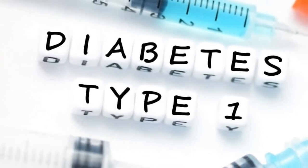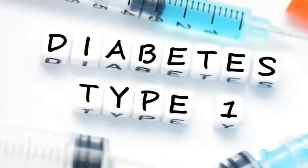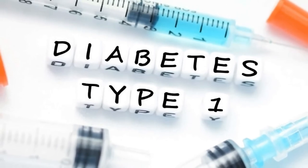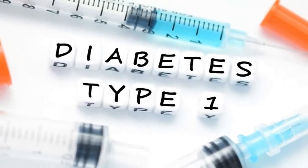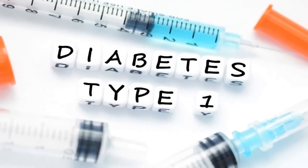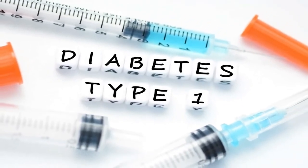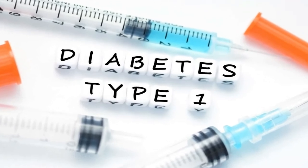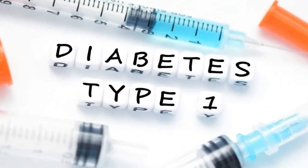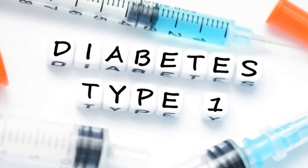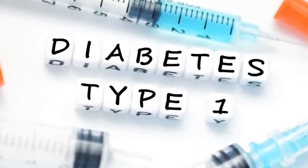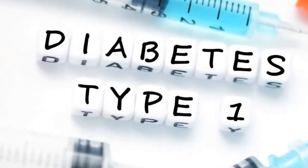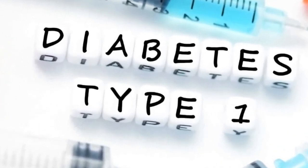Type 1 diabetes is an autoimmune disease. The body's immune system destroys the cells in the pancreas that make insulin, which means your body makes little or no insulin. People with type 1 diabetes must take insulin every day to live. About 1 in 20 people with diabetes have type 1.